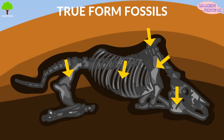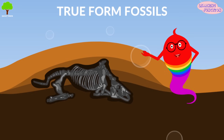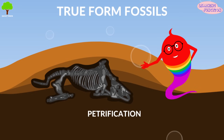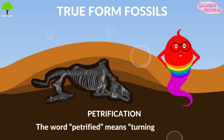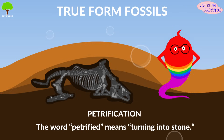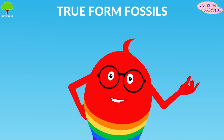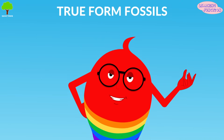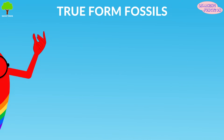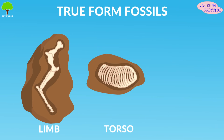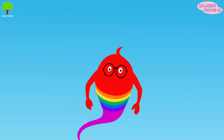True form fossils are large body parts of an organism that have been replaced by minerals, created by a process known as petrification. The word petrified means turning into stone. These types of fossils form when minerals replace all or part of an organism. Examples include limbs, torsos, and heads.